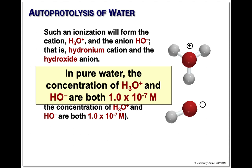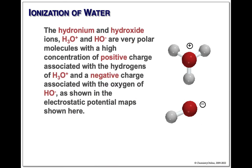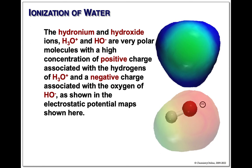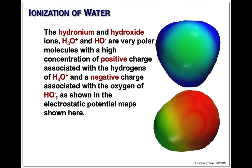When we do this autoprotolysis reaction, we're generating ions. Electrostatic potential maps can be used to describe these ions. For hydronium and hydroxide, hydronium has a big blue bottom — the oxygen area is kind of pale green — while hydroxide shows big, big red.